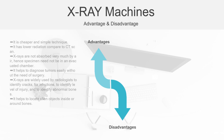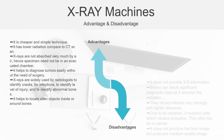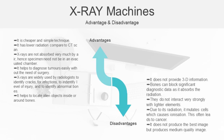Now let's look at the advantages and disadvantages. Some advantages are: it is a cheaper and simpler technique; it has lower radiation compared to a CT scan; it helps locate alien objects inside or around the bones; and it helps diagnose tumours easily without the need for surgery. Some disadvantages are: it does not provide 3D information; bones can block significant diagnostic data as they absorb radiation; and it does not produce the best image but rather a medium quality image.